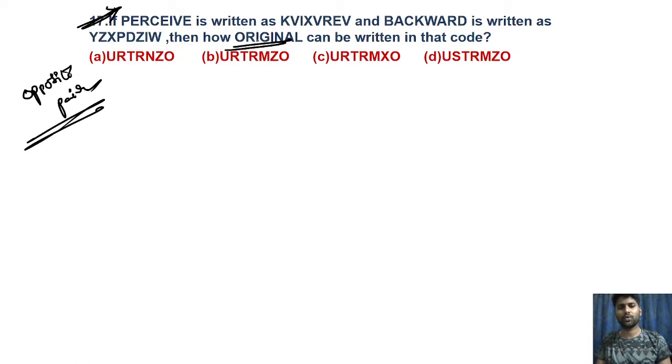For 'original': O — opposite is L (Love). R — opposite is I (Indira). I — opposite is R. G — opposite is T (Tata/Gandhi Test).